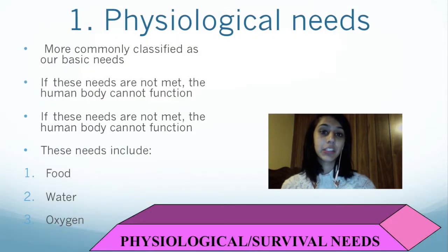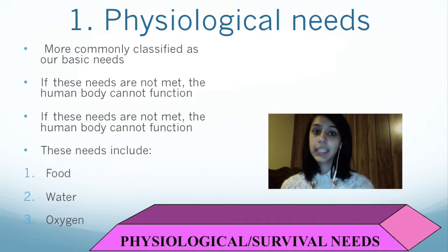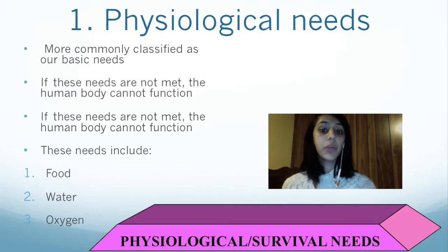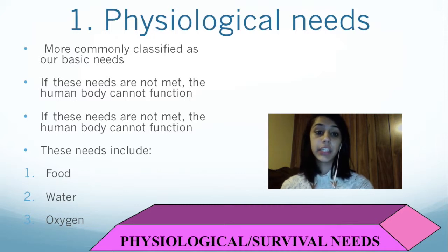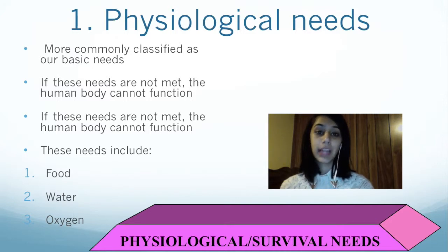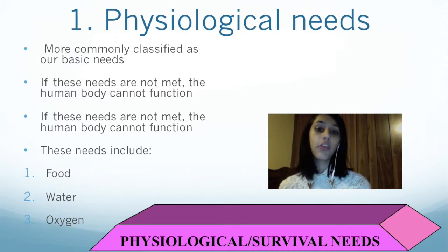The first stage in Meslow's hierarchy is the physiological need. More commonly known as our basic needs, these needs are necessary for life. If unmet, the human body cannot function. These physiological needs include food, water, oxygen, sleep, protection from extreme temperatures, and sensory needs such as hearing, seeing, feeling, and tasting. This is why schools, workplaces, and other managements provide lunch breaks, rest breaks, and wages that are enough to purchase the essentials of life.